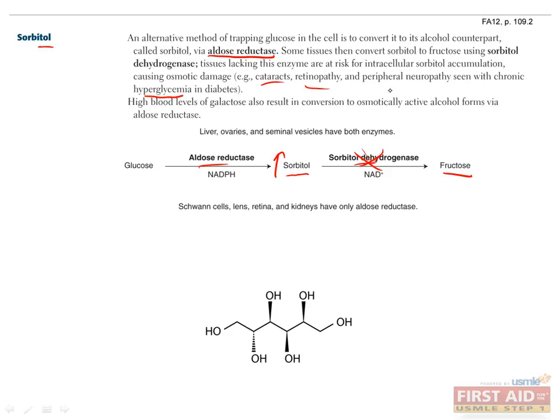This can cause cataracts, retinopathy, peripheral neuropathy, and glomerular disease. As I mentioned before, galactosemia can also result in the conversion to osmotically active alcohol forms of galactose via aldose reductase.